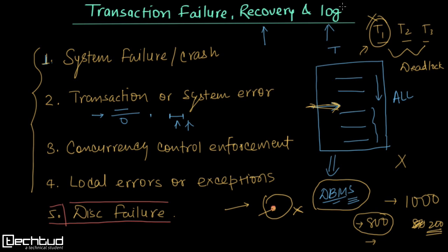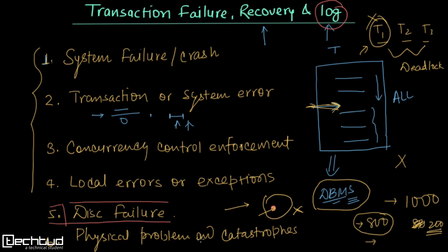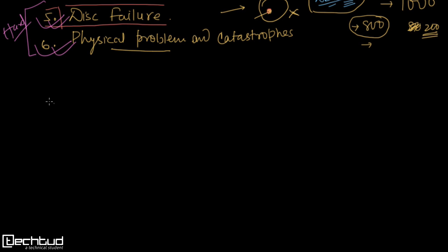Similarly, we can also have physical problems and catastrophes — for example, the whole system is destroyed due to an external issue like an earthquake or flood. These can also cause transaction failure and in this case it is also very hard to do recovery. So hard disk failure and physical catastrophes are very hard to recover, whereas the first four failure types are relatively easy to recover.